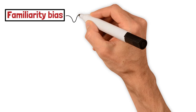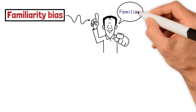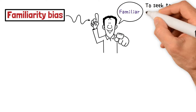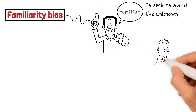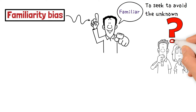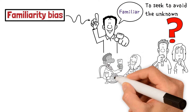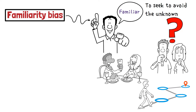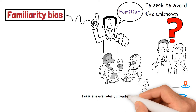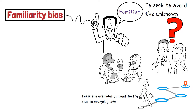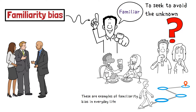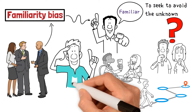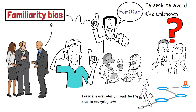Familiarity bias is the tendency for individuals to prefer what is familiar and to seek to avoid the unknown. Do you favor a specific brand of clothes? Perhaps you tend to favor eating at the same restaurants or using the same route again and again to reach a destination. These are examples of familiarity bias in everyday life. Many investors allow familiarity bias to affect the investment decisions that they take.